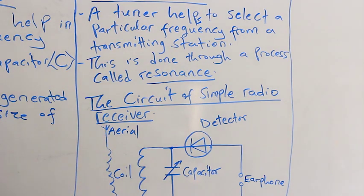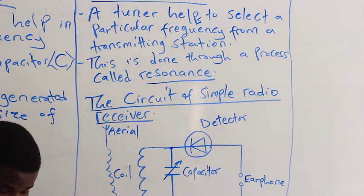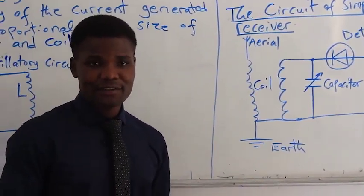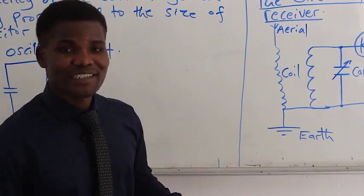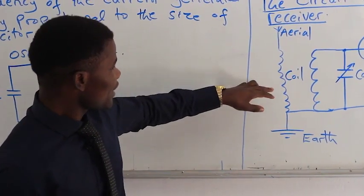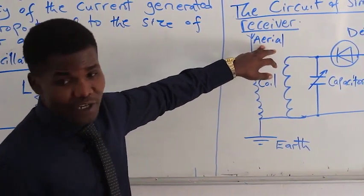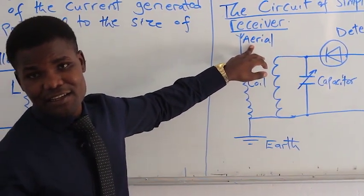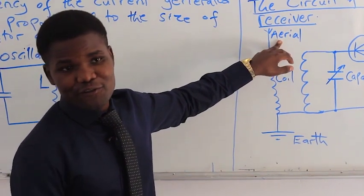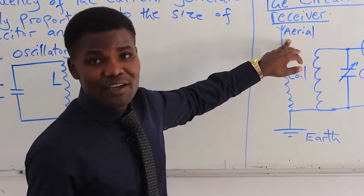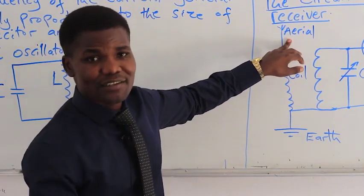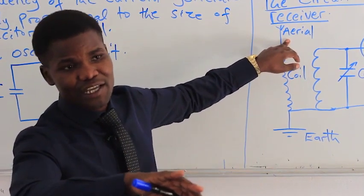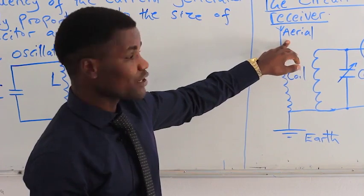Now, the circuit of a simple radio receiver. A receiver collects or takes in frequencies or signals. It includes an aerial, which is an antenna — for example, the earphone you use with your phone can act as an aerial. It collects or picks signals from the surrounding environment that were sent by a transmitter. Once picked up, the signal comes into the coil.